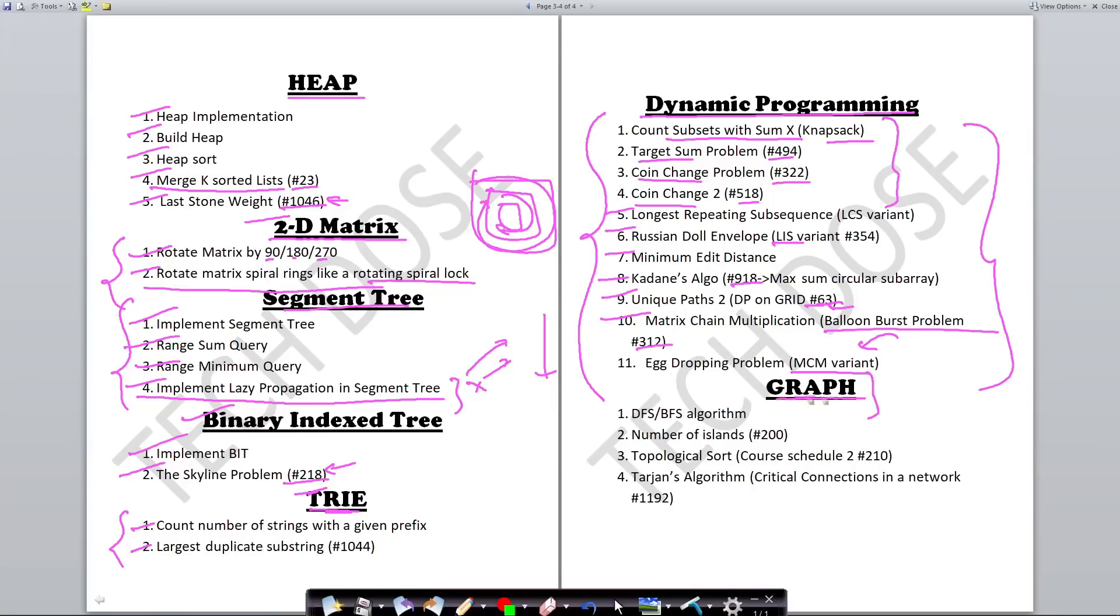The last part is graph. In graph, most companies only ask about DFS, BFS, and topological sorting. You need to revise DFS, BFS, and solve this problem—number of islands from LeetCode #200, a very important problem. After doing it, you can do topological sorting, which is the course schedule 2 problem for practice, #210 from LeetCode. If you're sitting for some high CTC companies, you can expect to be asked Tarjan's algorithm, which includes the bridge algorithm—how to find bridges or articulation points. You can practice this problem, LeetCode #1192, which is finding the number of bridges.